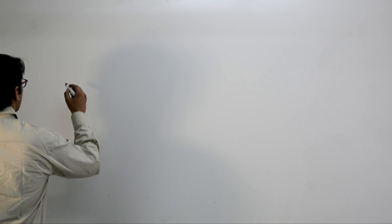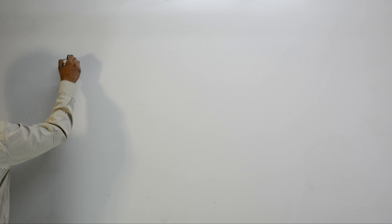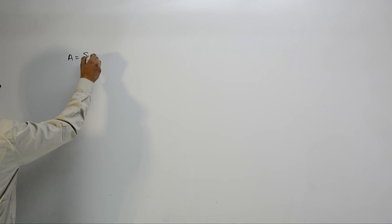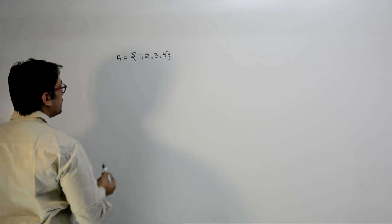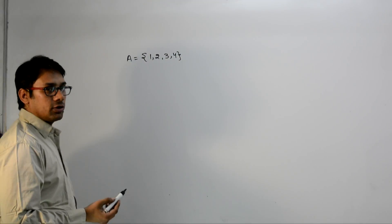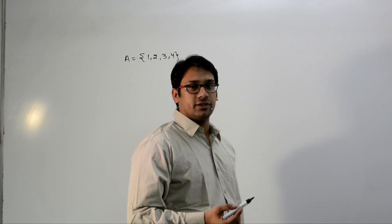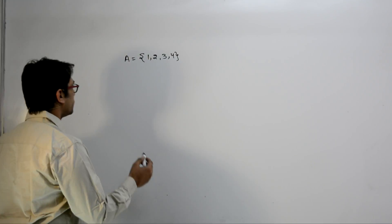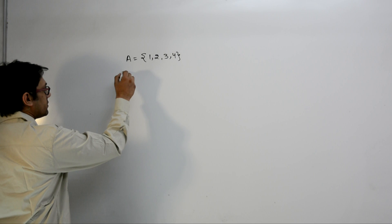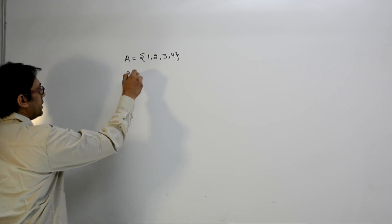Today we will discuss sets. A set is a well-defined collection of objects. For example, set A is denoted by a capital letter A and contains the elements 1, 2, 3, 4. These are finite elements in the set.